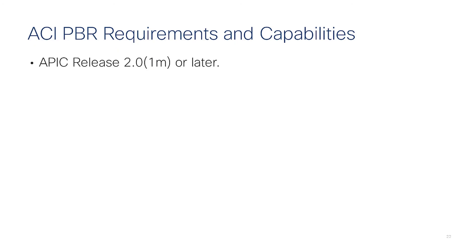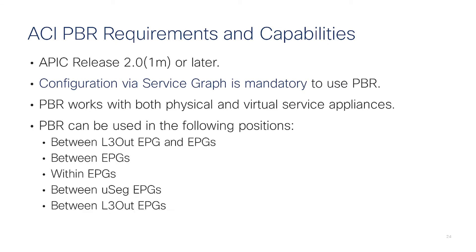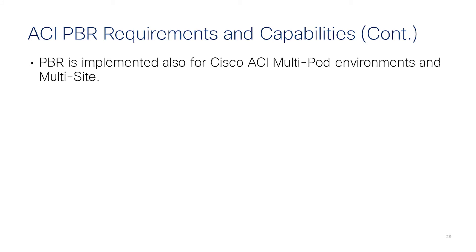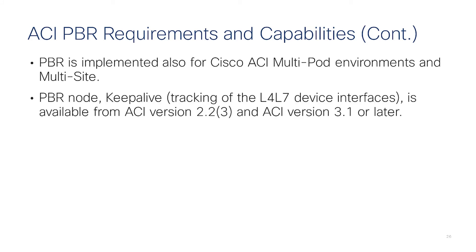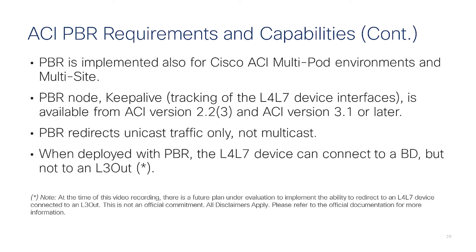The PBR requirements are as follows: the minimum release required is 2.0(1M). PBR works for both virtual and physical appliances, and can be used for traffic between EPGs, between a layer 3 out and EPGs, or even between layer 3 outs. PBR is available for multipod and multi-site. The Keep Alive feature is available from version 2.2(3) and 3.2(1) or later. Traffic that can be steered is unicast only — not multicast or broadcast. The device must be connected to a bridge domain; you cannot use a layer 3 out as a connectivity point when redirecting to the layer 4 device interface.